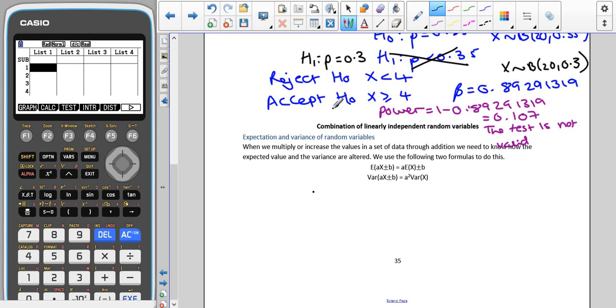So now we're moving on to combinations of linearly independent random variables, and we're going to start this by having a recap of what you should have looked at in AS.